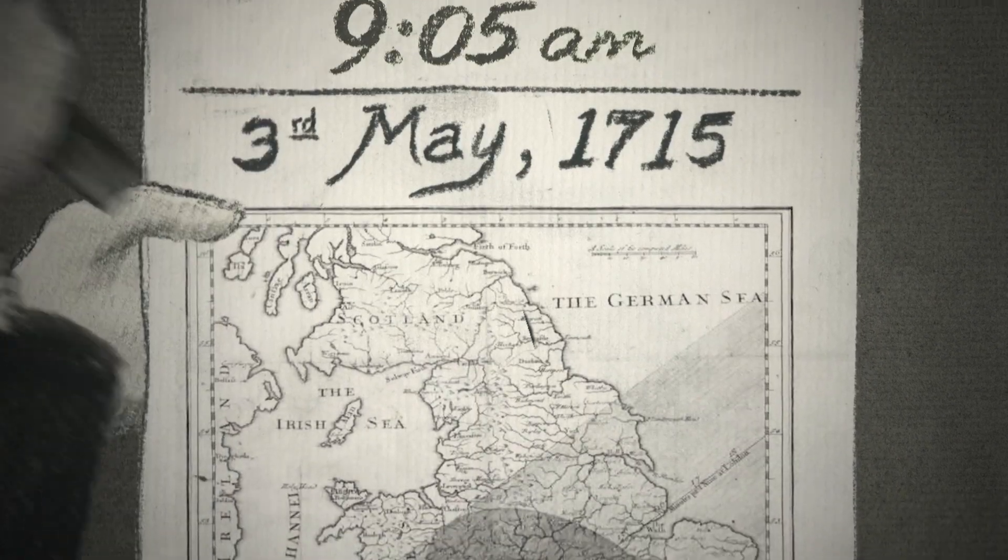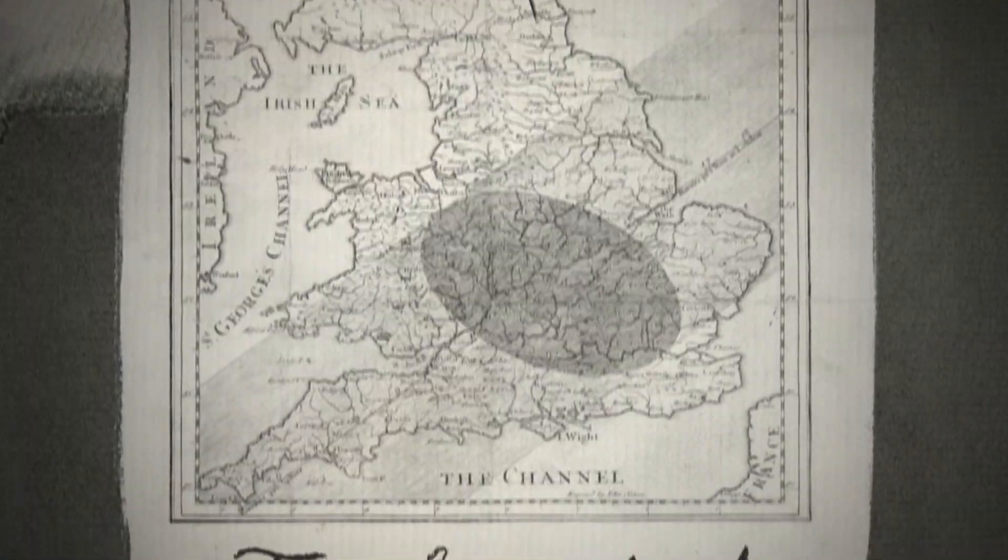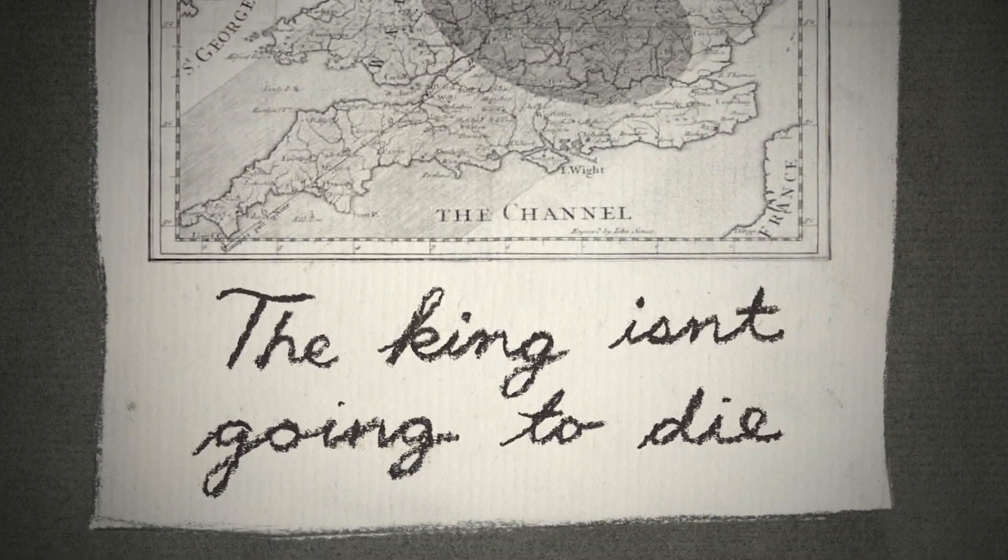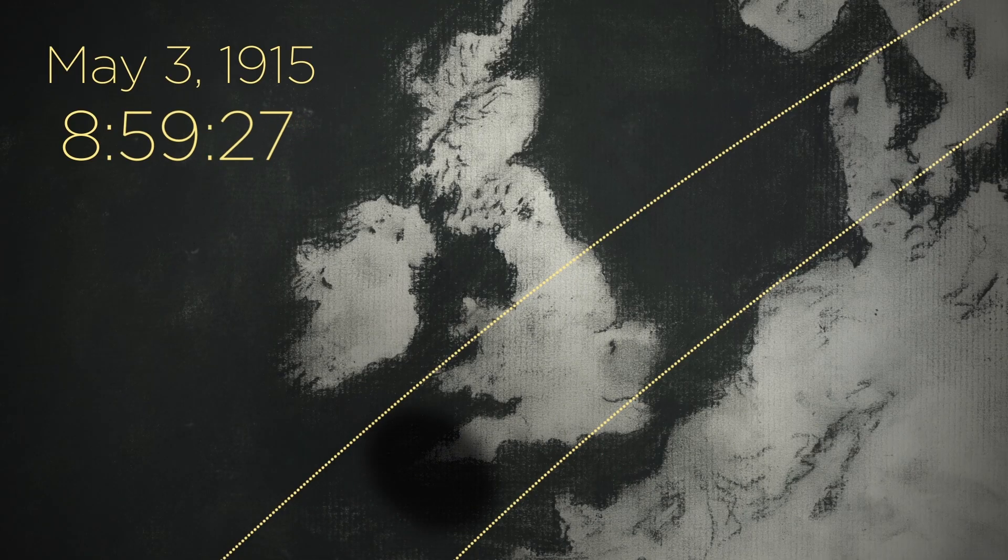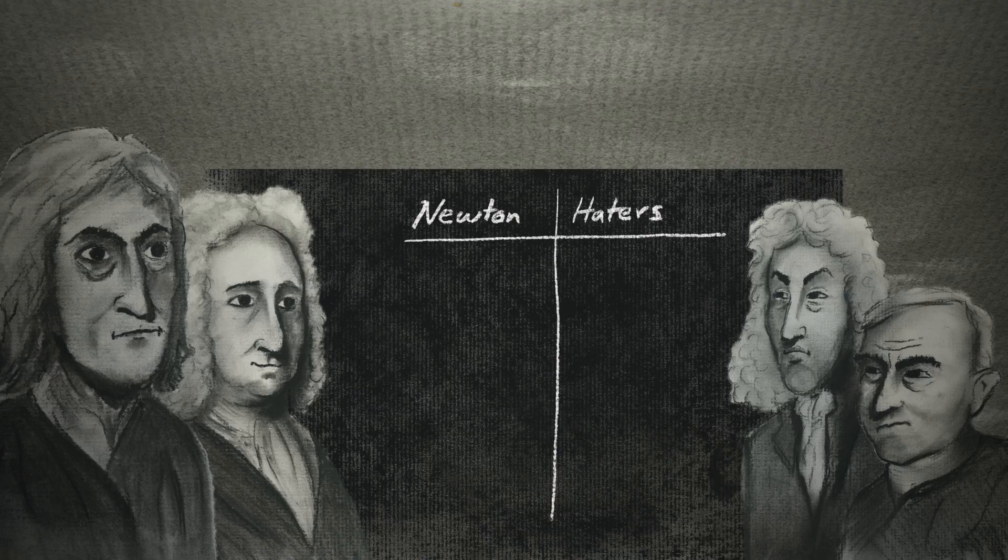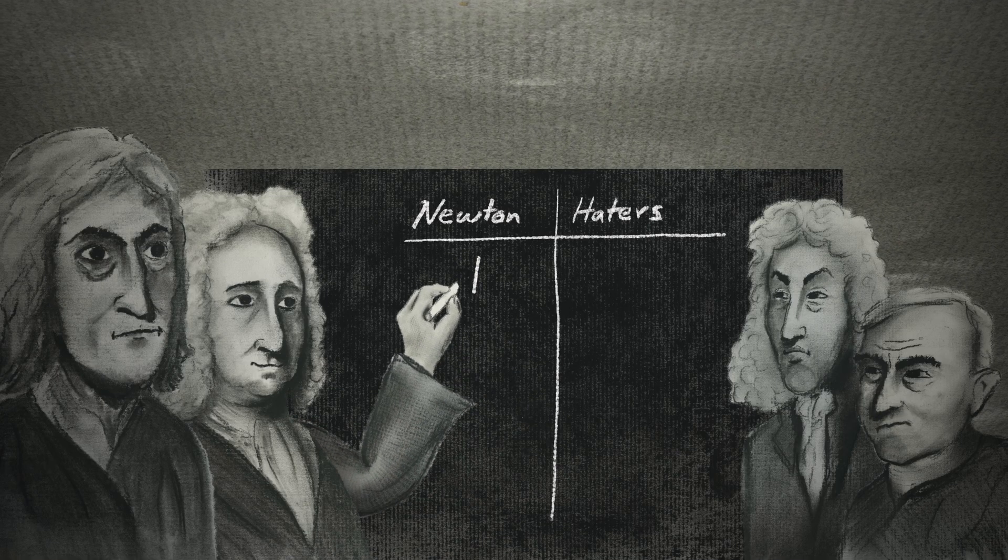And he printed up these handy posters that reassured everyone, no, the king isn't going to die. Halley got impressively close. The sun went dark at 9 sharp. And that eclipse proved Newton wasn't crazy. He was a genius.